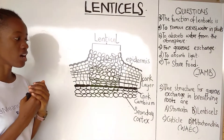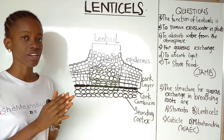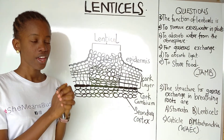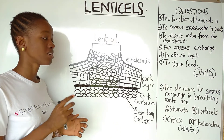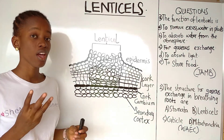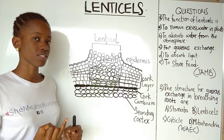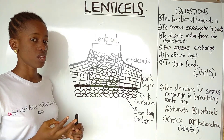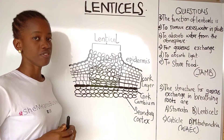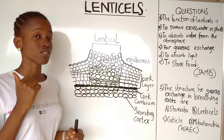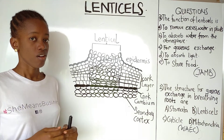Lenticels are involved in gaseous exchange. In my other video, I talked about gaseous exchange in plants and said there are three main pores through which gaseous exchange occurs: the stomata, the lenticels, and the root hairs. I talked about stomata in another video — please watch that, because I'll be repeating some of that knowledge here.